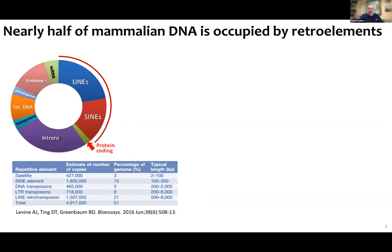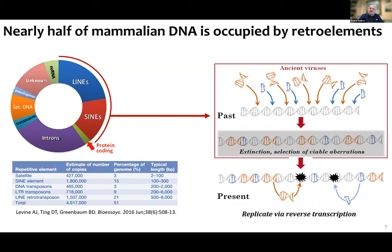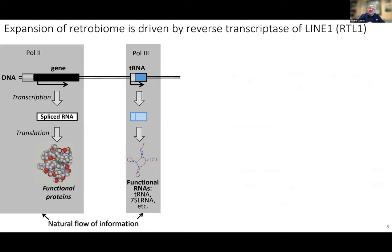These elements appeared in our DNA as multiple explosions during evolution. Every explosion was most likely associated with a huge burst of genetic diversity and potentially genetic catastrophes, followed by quiet periods when the amplification did not occur.